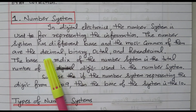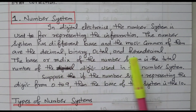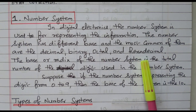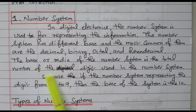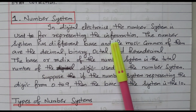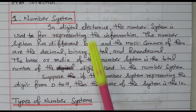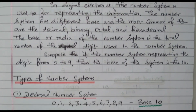There are four basic types available — decimal, binary, octal, and hexadecimal — all differing by the base. Base means the number of digits available in the number system. By using these different number systems, we can represent information in digital electronics. Now we will see the types one by one.